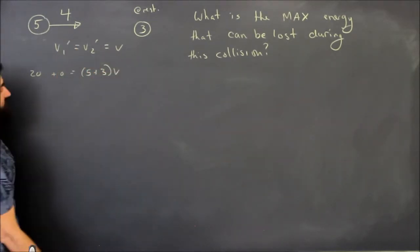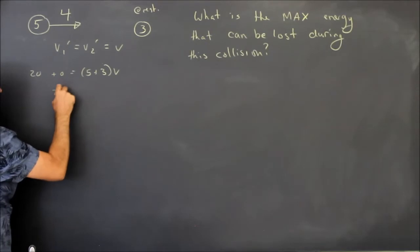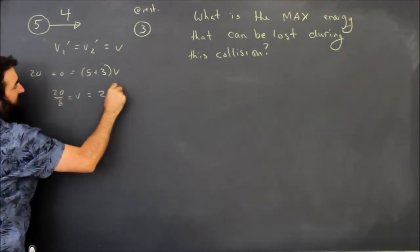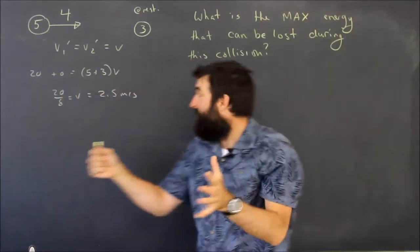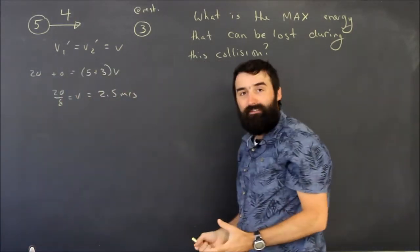So that means that 20 over 8 is equal to V, and V is 2.5 meters per second. No problem. That's how fast they go if they were to stick together.